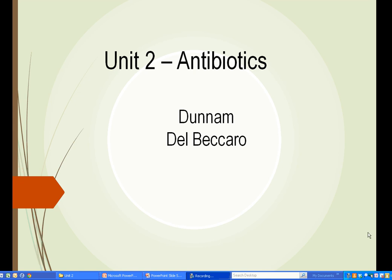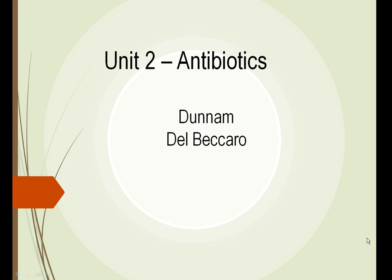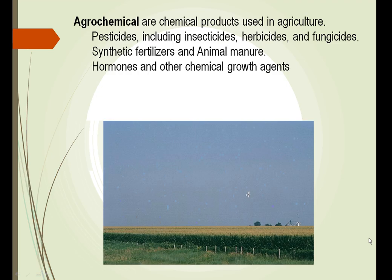This is Unit 2 Antibiotics. Agrochemicals are chemical products used in agriculture. This includes a wide variety of different chemicals that we use, from the crop dusters spraying the entire fields to us putting chemicals on our lawn. Some of these pesticides include insecticides, killing insects, herbicides, killing plants.